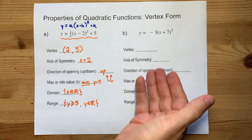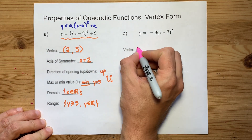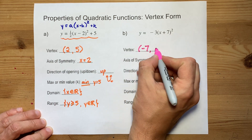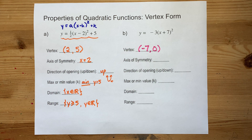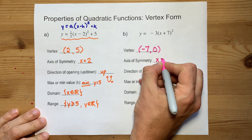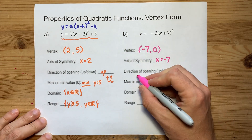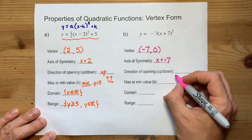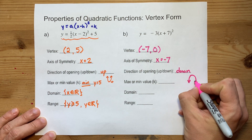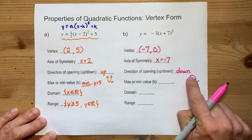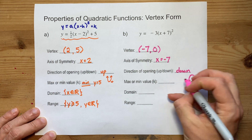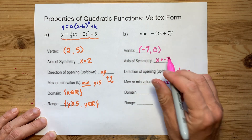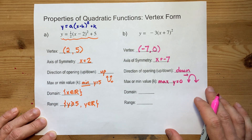Let's do another one. The vertex is controlled by the horizontal shift — 7 to the left — and the vertical shift, which is nothing. So those are the coordinates of the vertex. The axis of symmetry comes from the x-coordinate of the vertex you just wrote down. The direction of opening comes from whether there's a negative out front with the a value — there is a negative here, so this one opens down. If it opens down, there's no limit to how low it can go, which means we have a maximum. That maximum is always the y-coordinate of the vertex, so the maximum here is y equals zero.